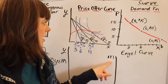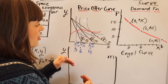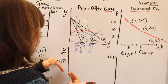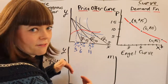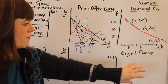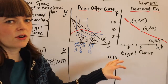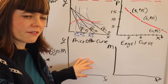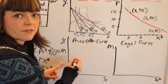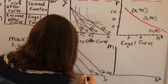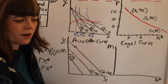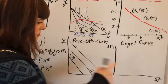Now up here we were changing price, so our budget constraints were rotating in and out. But down here we're going to be changing money, so these budget constraints are going to be shifting in and out parallel. It's the same exercise: deriving optimal choice and then pairing the amount of money with the optimal choice for our Engel curve. We draw three budget constraints with different amounts of money — $100, $200, $300 — and optimize for each.